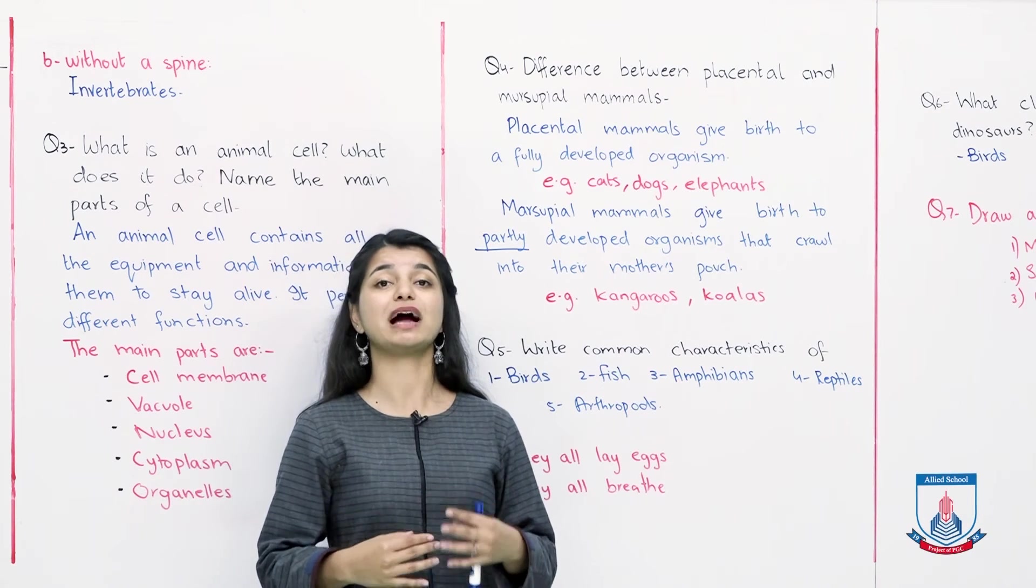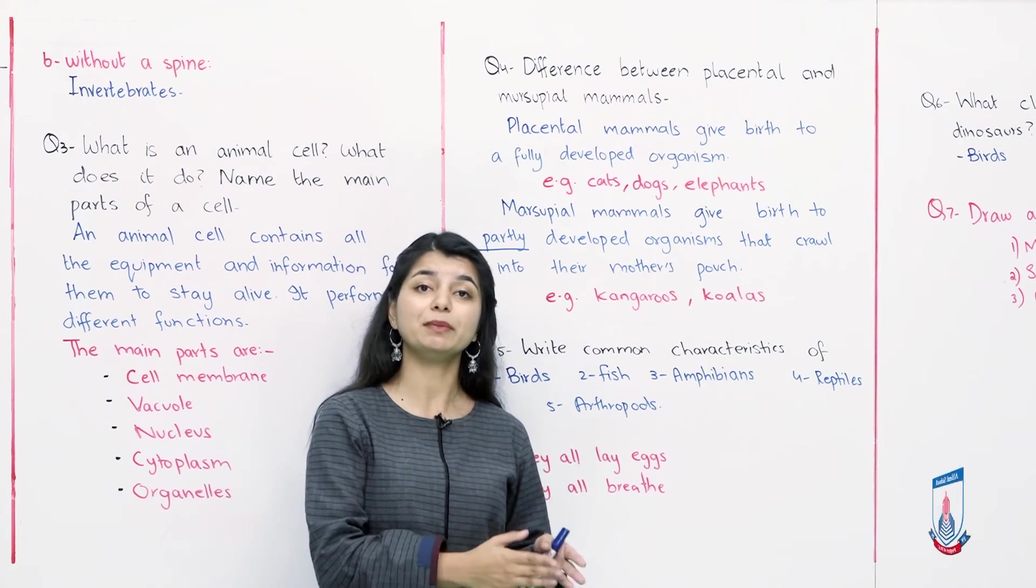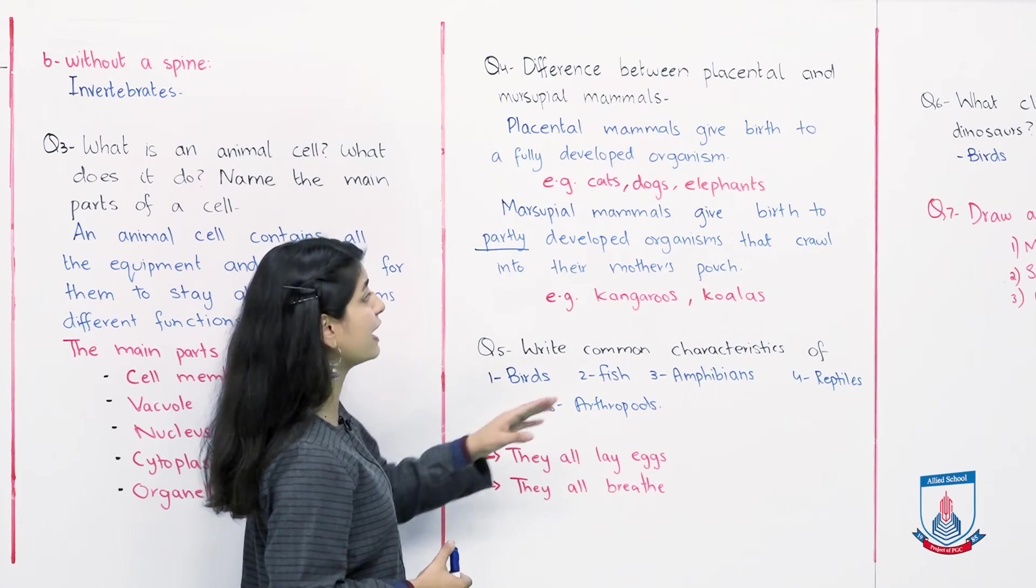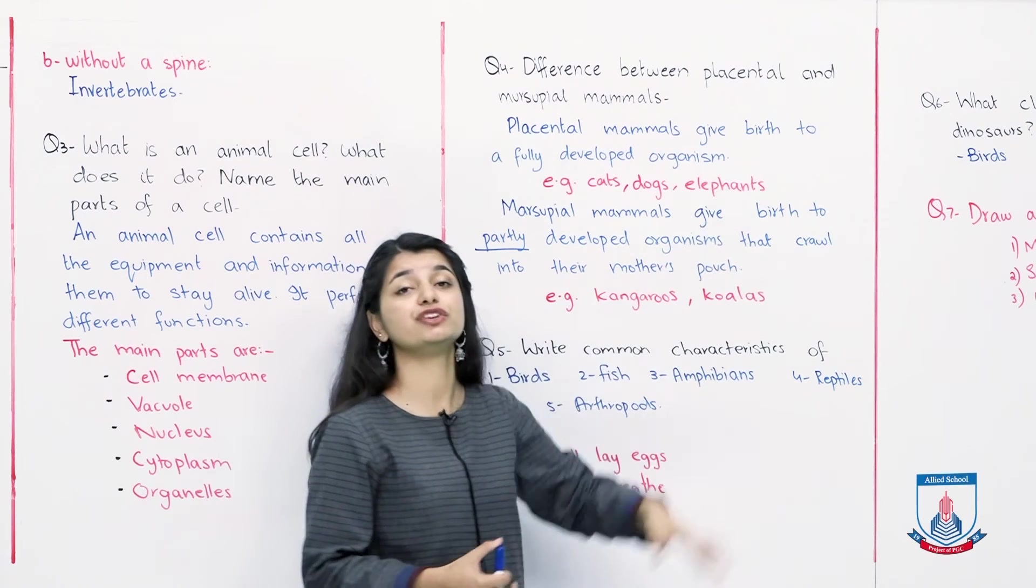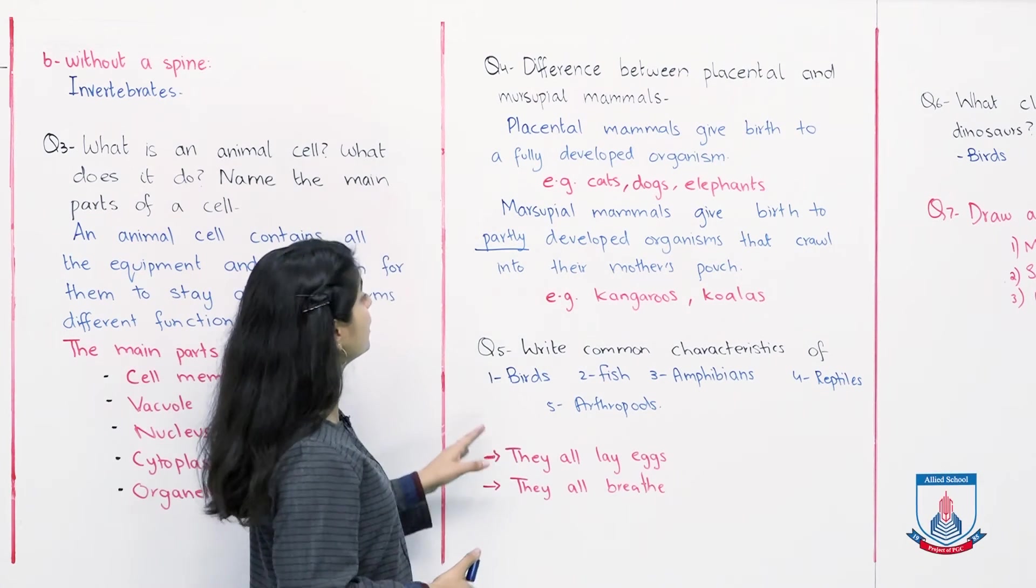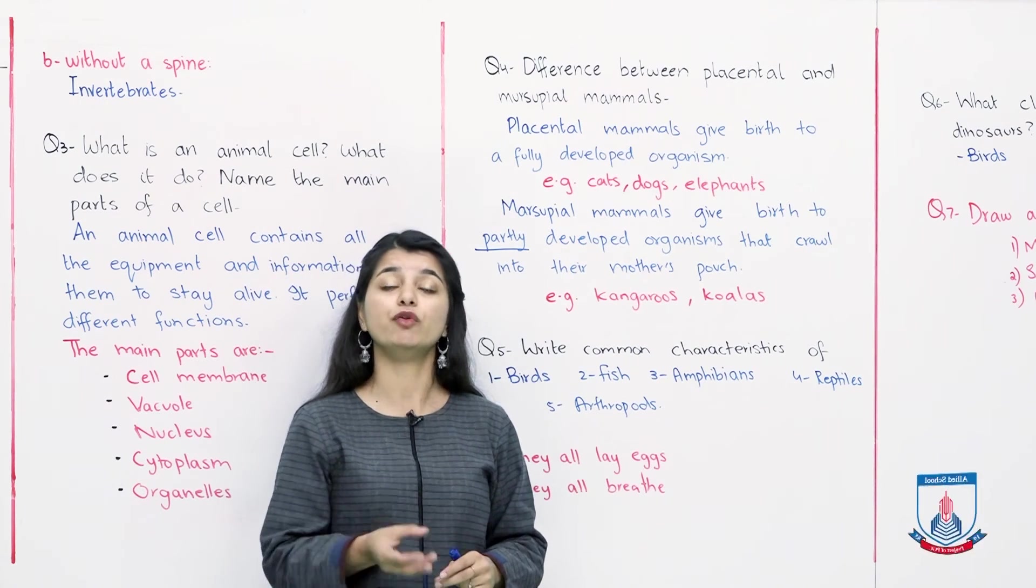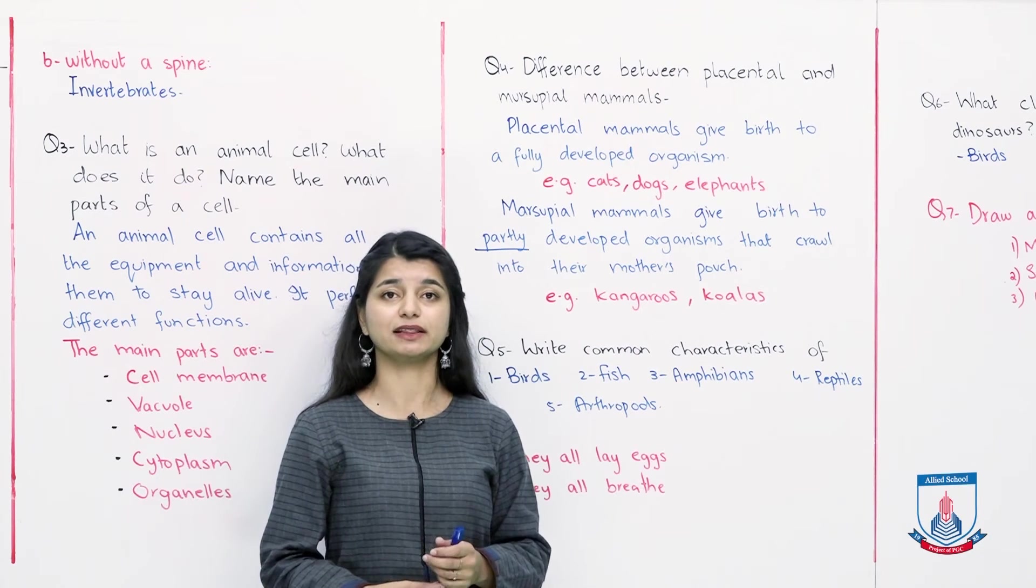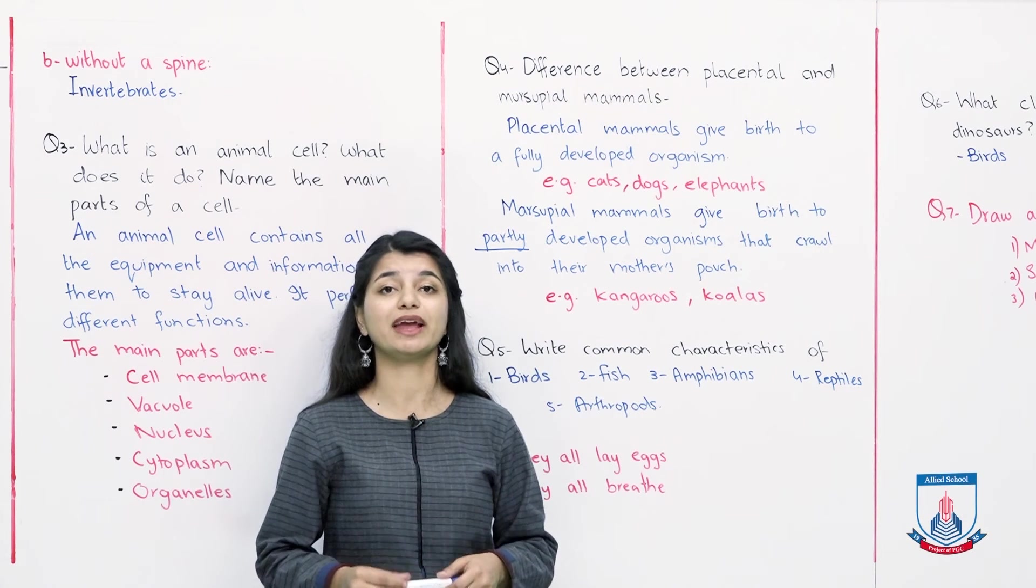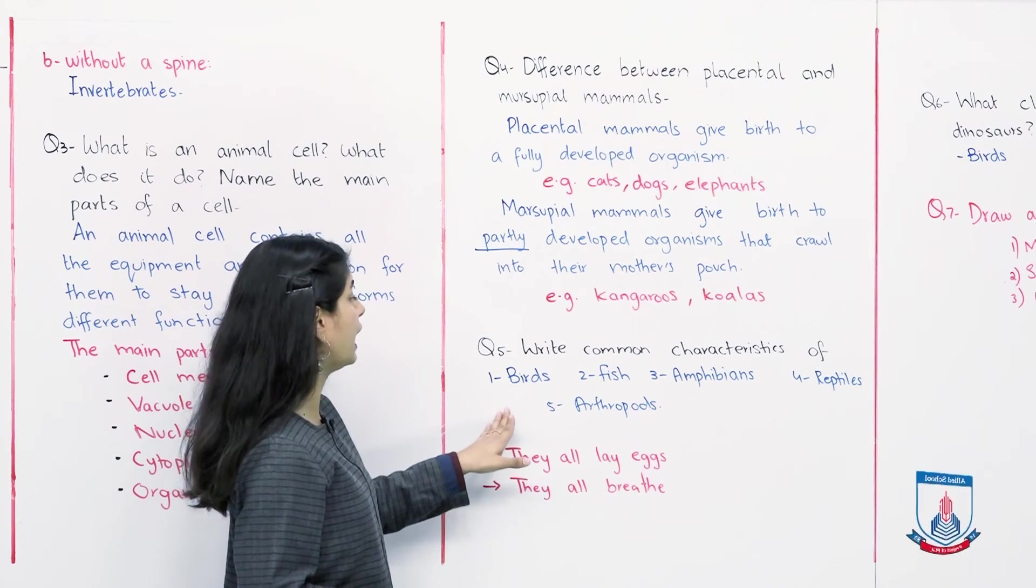That crawl into their mother's pouch and grow there. So what happens in the marsupial mammals? The offspring does not fully develop. The offspring crawls in its mother's pouch and gets the rest of its nourishment and development there. So these are the differences between both marsupial mammals and placental mammals. In their example, if you can see, placental mammals include all animals like cats, dogs, elephants, which we talk about. In the marsupial mammals, there are kangaroos and koalas and such animals which you have seen carrying their offspring in their pouch.